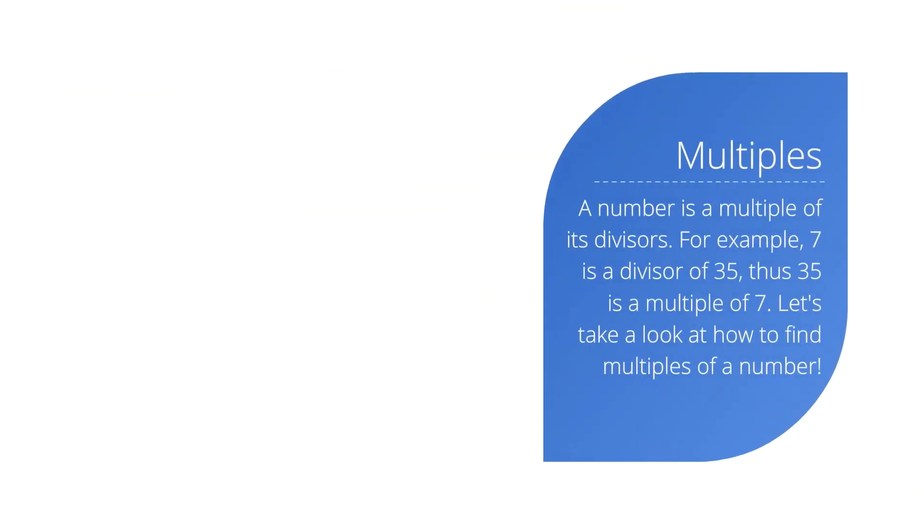Multiples. A number is a multiple of its divisors. For example, 7 is a divisor of 35, so 35 is a multiple of 7.